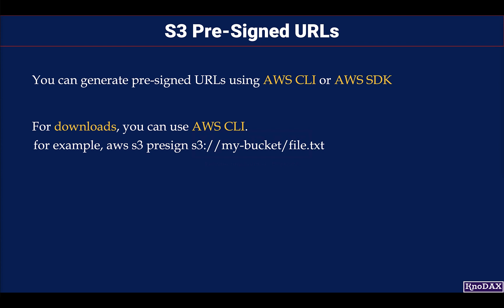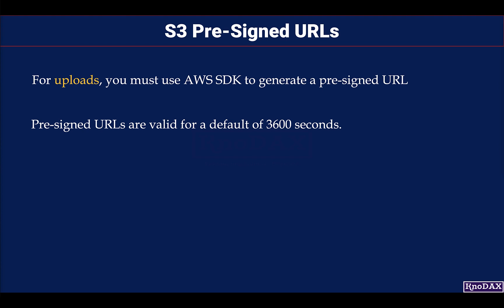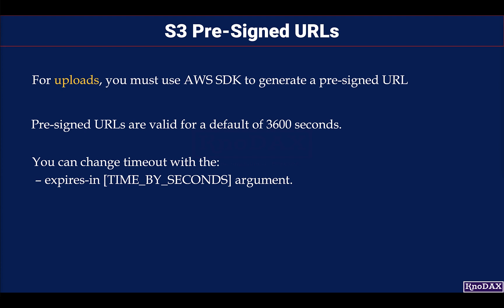The generated pre-signed URL can be used by you or anyone you share it with to upload objects to S3. Pre-signed URLs are valid for a default of 3600 seconds. You can, however, change the timeout with the expires-in argument.